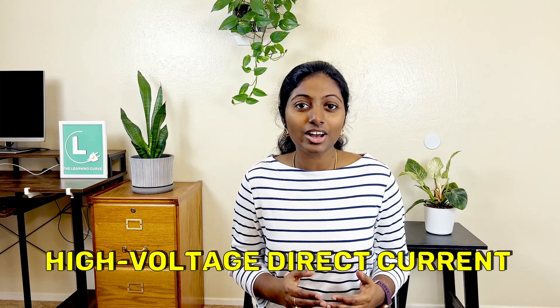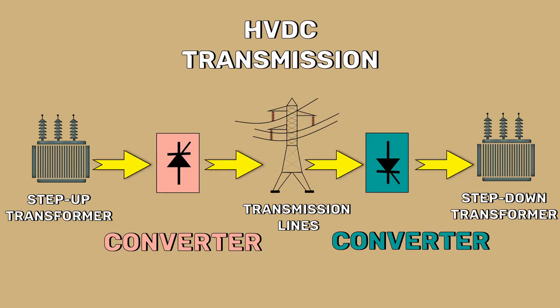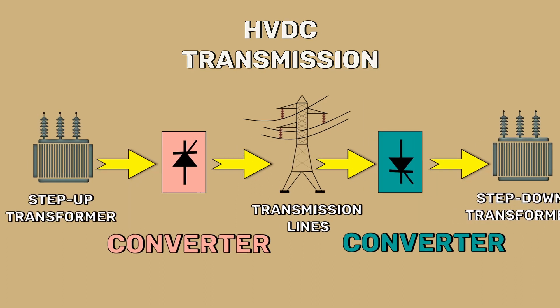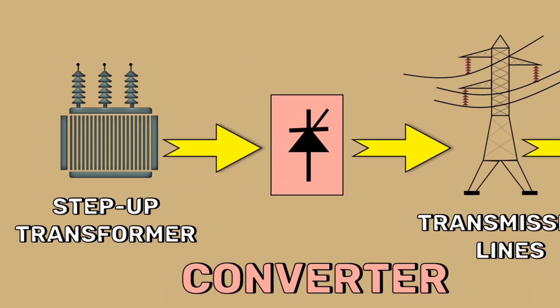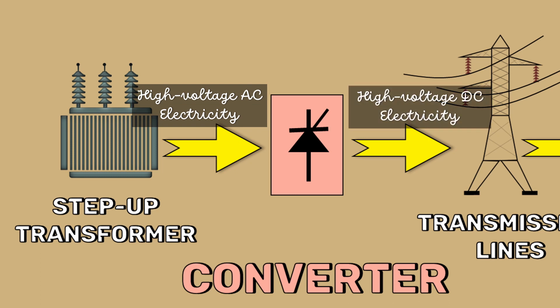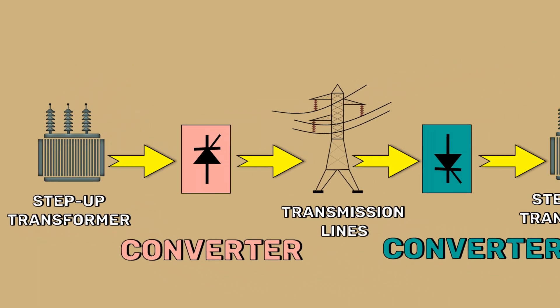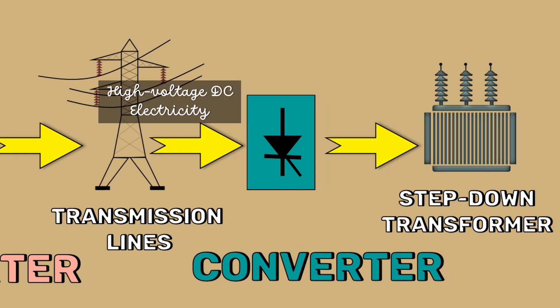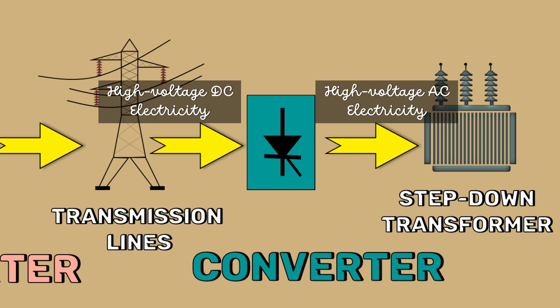A high voltage direct current, or HVDC, uses direct current or DC for electrical transmission. It mainly consists of two converter stations. The sending end converter receives the input from the step-up transformer and converts this high voltage AC electricity into high voltage DC electricity. The receiving end converter receives the high voltage DC input and converts it back to high voltage AC or HVAC.